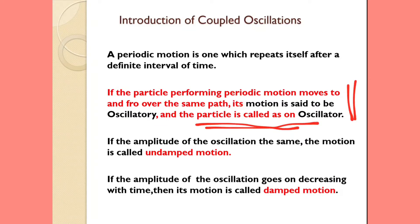We are studying here two concepts: one is oscillatory motion and another is oscillator. If the particle performing periodic motion moves to and fro over the same path, its motion is said to be oscillatory motion and the particle is called an oscillator.